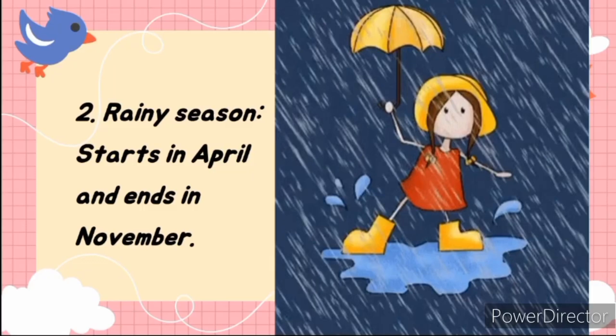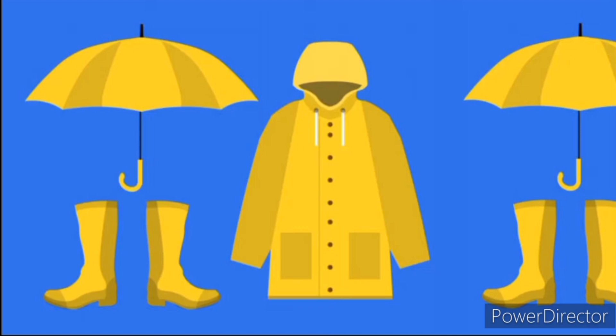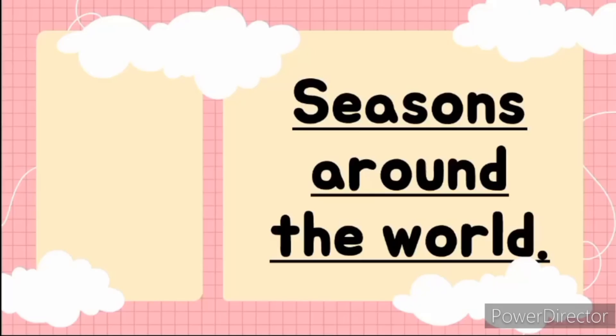The next season in Nigeria is the rainy season. It starts in April and ends in November. It rains a lot during this period and the weather is sometimes cloudy and cold. We must always use umbrellas, raincoats, and rain boots to stay warm and dry during the rainy season.